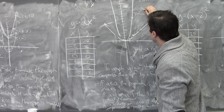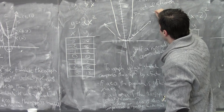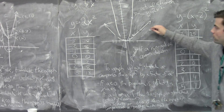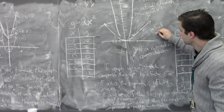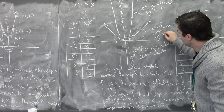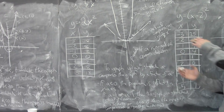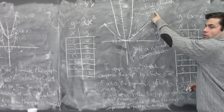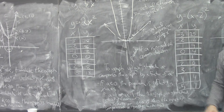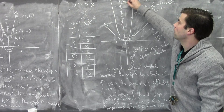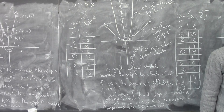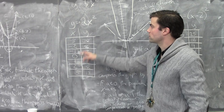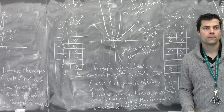So y equals 2x² is called a vertical stretch, and y equals one-half x² is called a vertical compression. Obviously, the lower the fraction the more compressed you get, and the higher the A value the more stretched you get. For example, y equals 100x² would look almost like two straight lines going up and down — extremely stretched. You can figure that out by doing a table of values, plugging in your x values, and finding the y values.